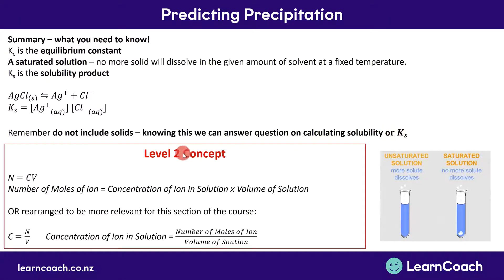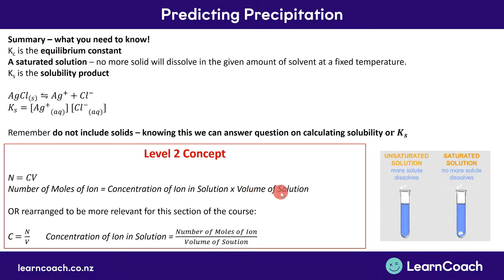A new concept we're going to be looking at today is from Level 2, and it's the equation N equals Cv. This equation relates the number of moles of an ion in a solution to the concentration of the ion in the solution and the volume of the solution. We're going to be needing this equation today, particularly to work out concentrations.